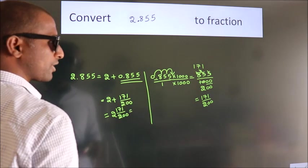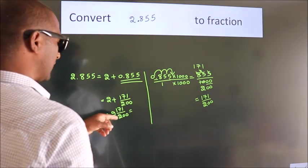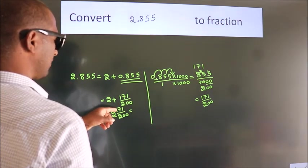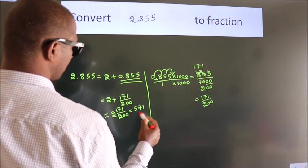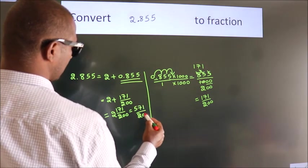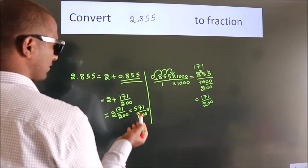And in improper fraction it is 2 into 200, 400 plus 171 by 200 is our fraction.